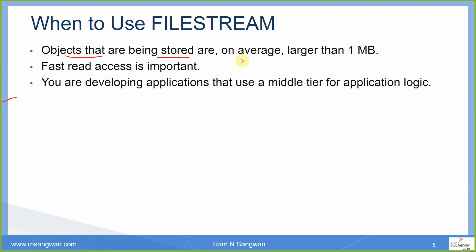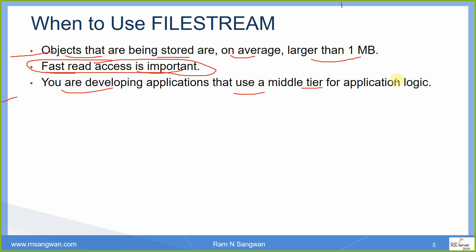Use cases are self-explanatory: use FileStream when objects being stored are on average larger than 1 MB in size, and when fast read access is important. What is recommended is NVMe storage and SSD storage. I recommend creating a separate storage if allowed — check whether block storage and NVMe-type storage can be attached. In production scenarios, NVMe and SSD storage are used for FileStream because fast read access is critical and we cannot rely on disk platters. Another use case is when developing applications that use a middle-tier application for application logic.